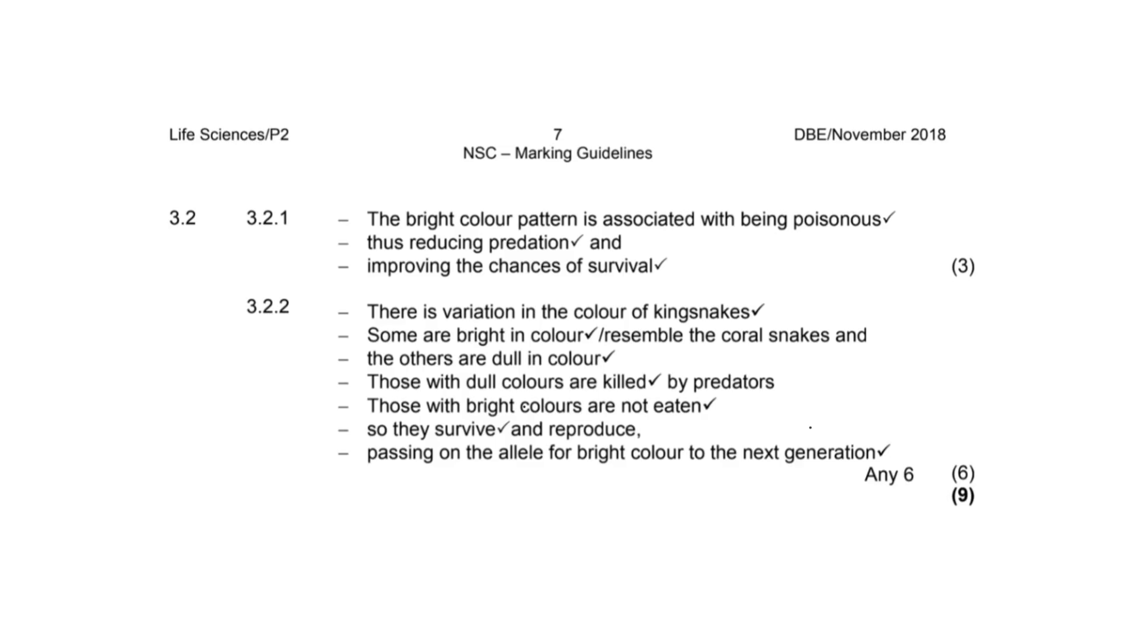So here for your reference, I've included the official marking guideline. It's important to look at these guidelines because you must actually spend a little bit of time studying them. I'll just show you now how my cause and effect thing works. If you look at 3.2.1, here is my cause and here are the effects, or my statement with my reason. So cause: bright color pattern is associated with being poisonous. Effect of that means they're less eaten. Effect of that means they have a higher chance of survival. And in reference to our second question here, yet again, we are substituting in the snake example into the guideline. And that is always going to get you full marks. You will notice it says any six. So that means that you can provide any six of these points and still do well.